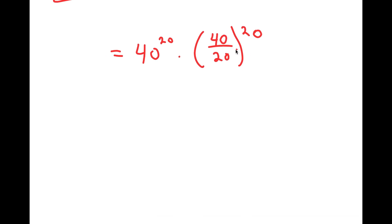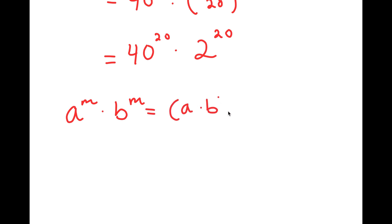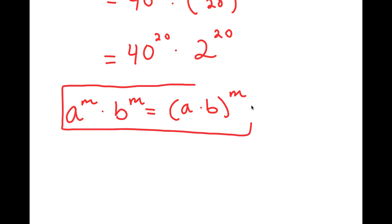Now, 40 divided by 20 is 2. So I get 40 to the power of 20 times 2 to the power of 20. Now, if I have something in the form a to the power of m times b to the power of m, this is equal to a times b to the power of m. And this is my third and final property for this video.